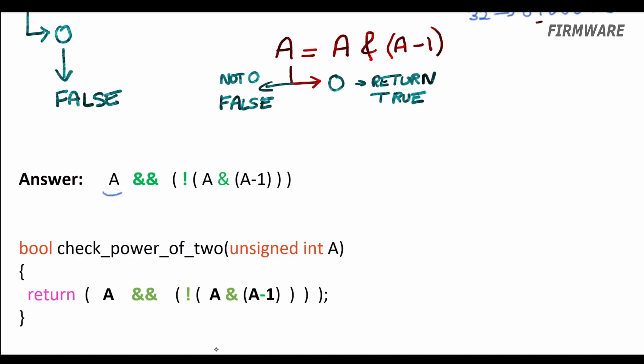The first part will make sure the result is false if A is 0. If A is non-zero, this section is true. The second section will check how many ones are there in A. If only a single one, then the whole section will be true as this section will be false. This means if A is a power of 2 and non-zero, then the final result will be true.